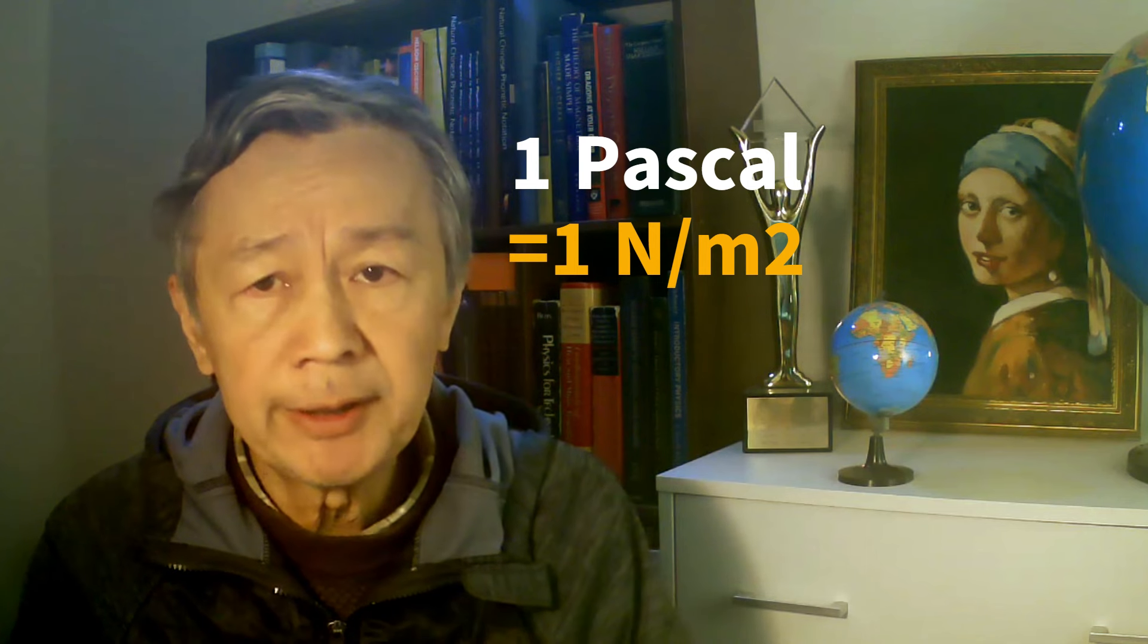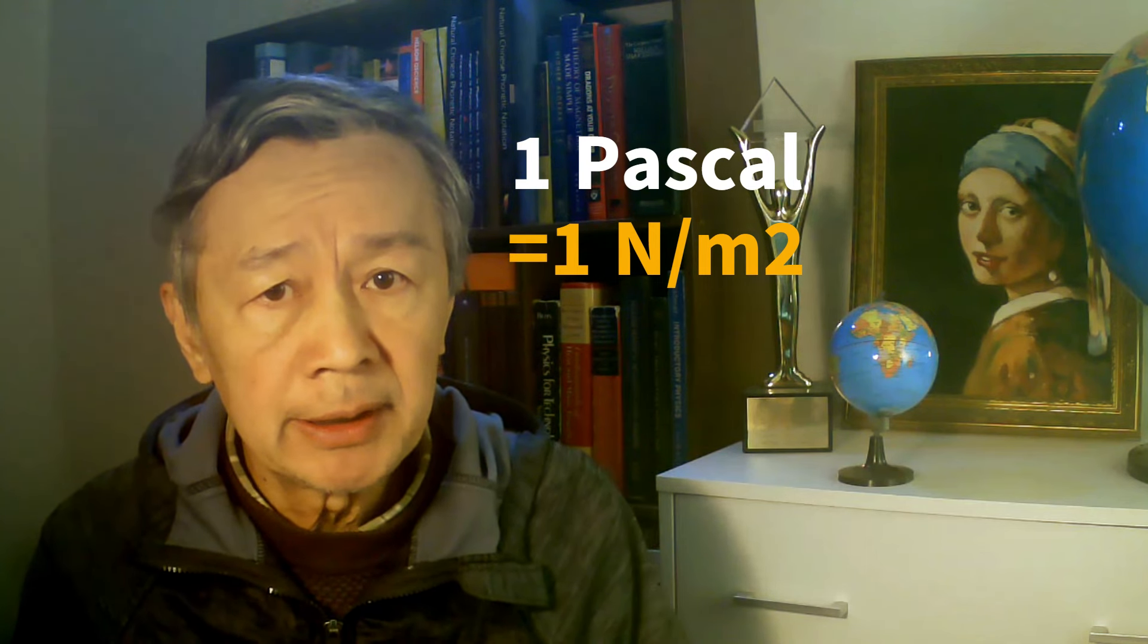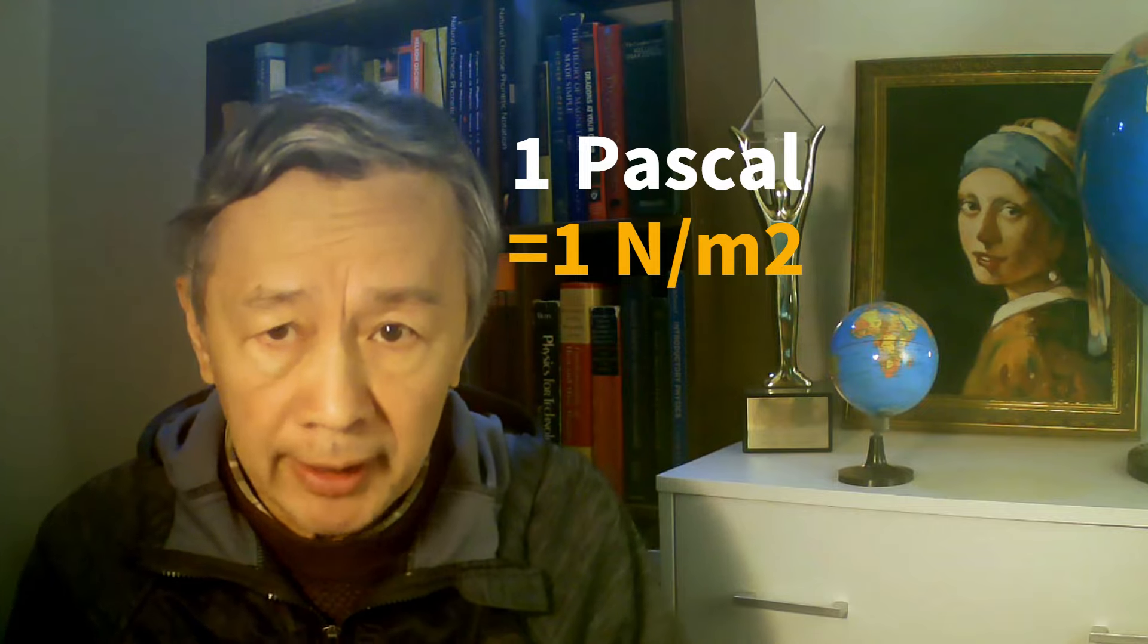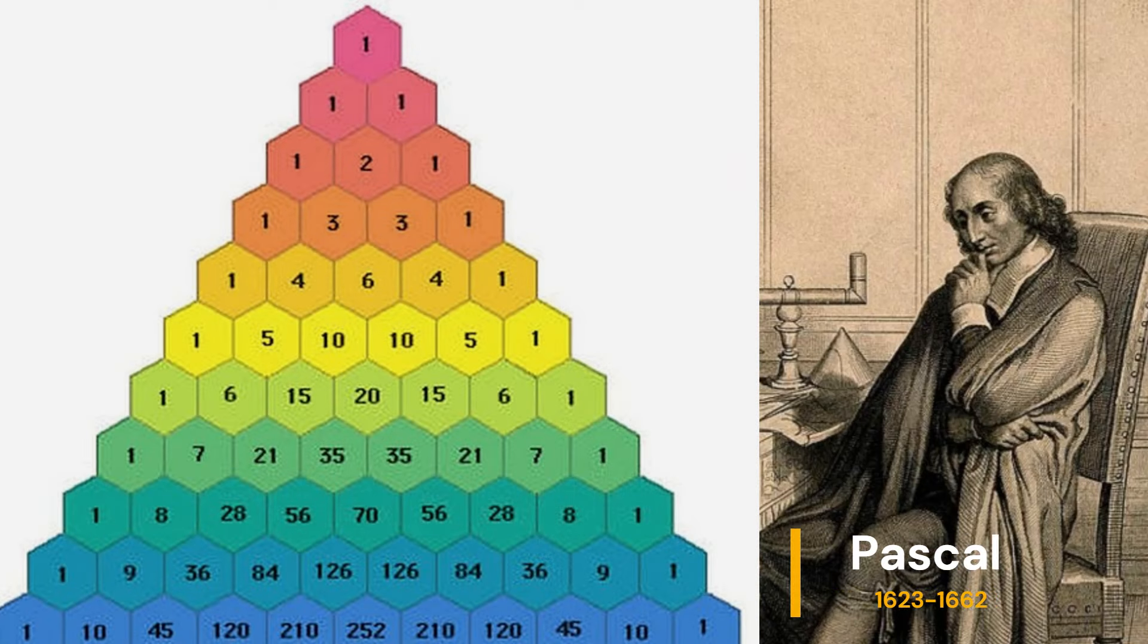First, the unit for pressure in system international or système international is a pascal, or one newton per square meter. From the unit you know the pressure by definition is a force per unit area. By the way, Pascal was also famous for his Pascal triangle when you studied binomial theorem in high schools.